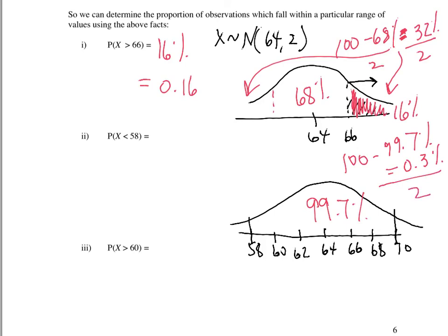Outside of three standard deviations would be 100 minus 99.7%, which is 0.3%. And I want half of that — I just want to know about the left tail. So I put an arrow on 58 going to the left, and I want to know what proportion is left of 58. It's going to be 0.3% divided by 2, which is 0.15%, written as 0.0015. So the answer is 0.15% or 0.0015.